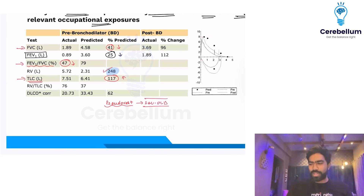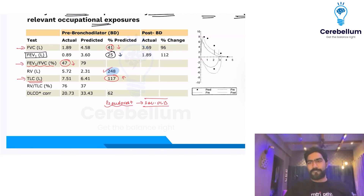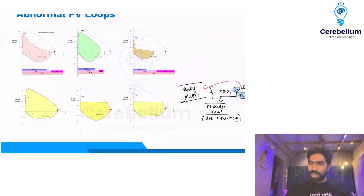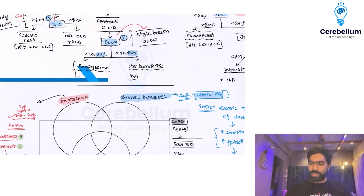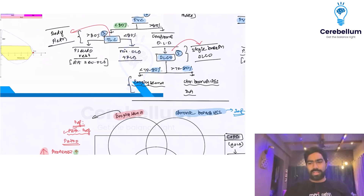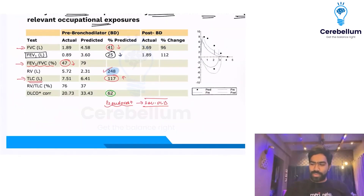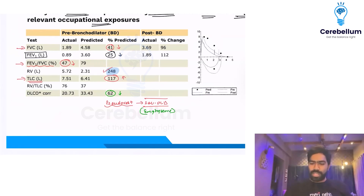Can you find out what the obstructive lung disease is? The only obstructive lung disease with a low DLCO that you need to know for the exam is emphysema. Look at the DLCO — it is less than 80%. So we can confirm that this severe obstruction is due to emphysema.